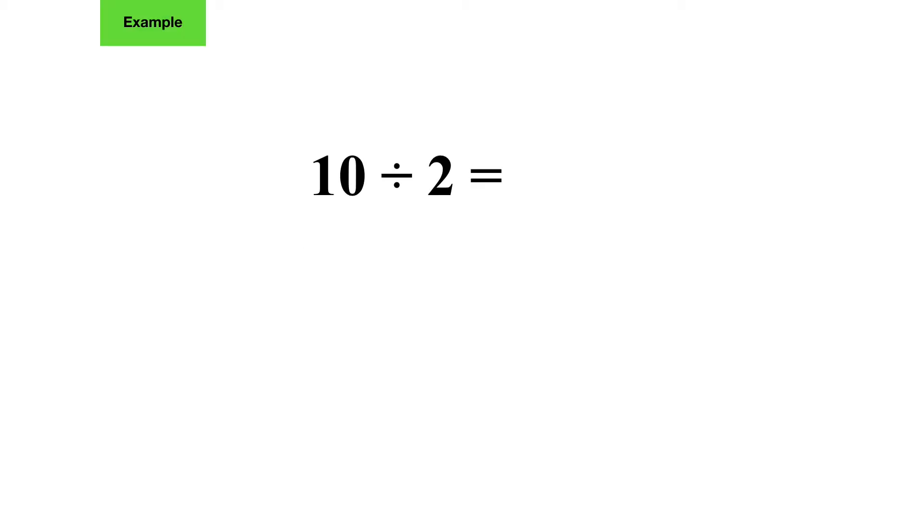For example, we have 10 divided by 2. We can imagine we have 10 apples to divide into 2 boxes. Our rule says we use the divisor, which is 2. We're going to use the divisor to make multiples while keeping count of how many multiples we make. We have our multiples and our count of how many multiples we got.